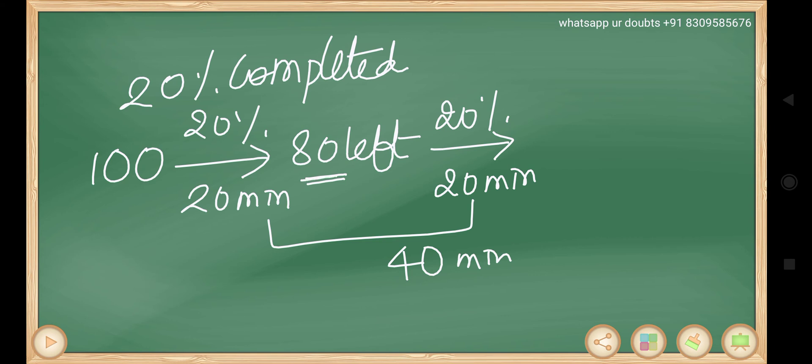So the completed part will be 20% of 80 means 16. 16 completed. Here 20% completed, that means 20 completed. Here 16 completed. So total completed part is 36 and total left part is 64 after 40 minutes.